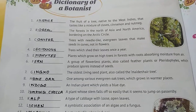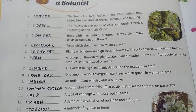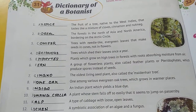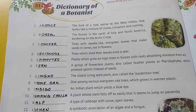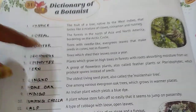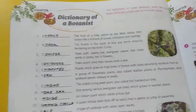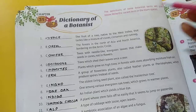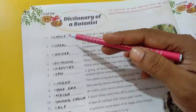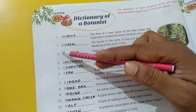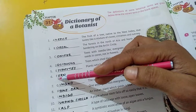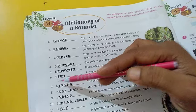Very good morning kids — this is chapter number 31 of your GK book. Today we will discuss the definitions of some botanical terms. They are given here with blank spaces and the first letters of the words are written. So now let us start.